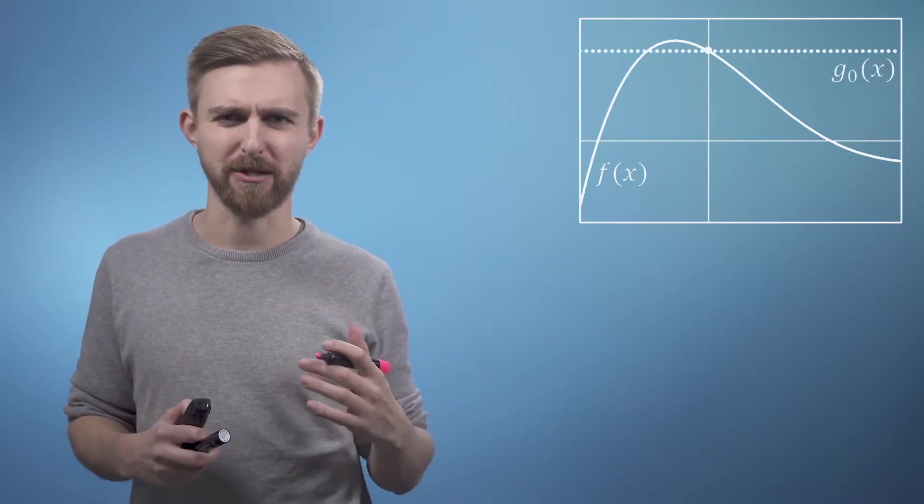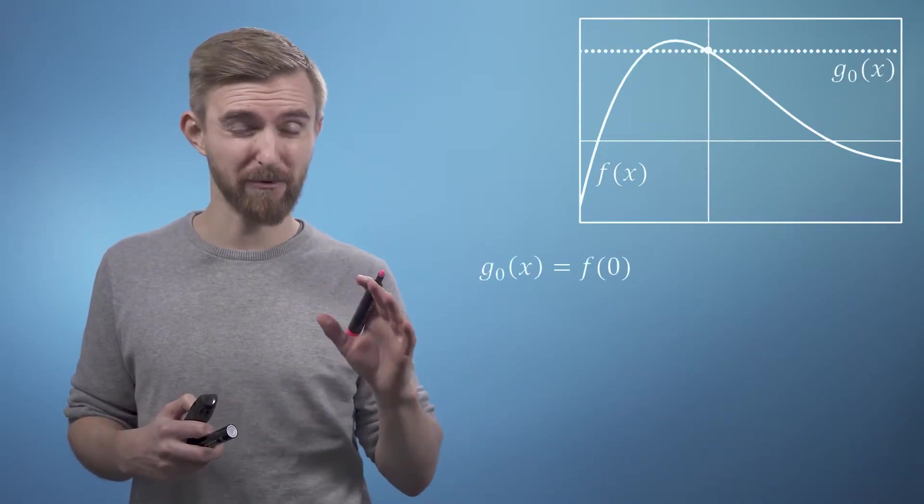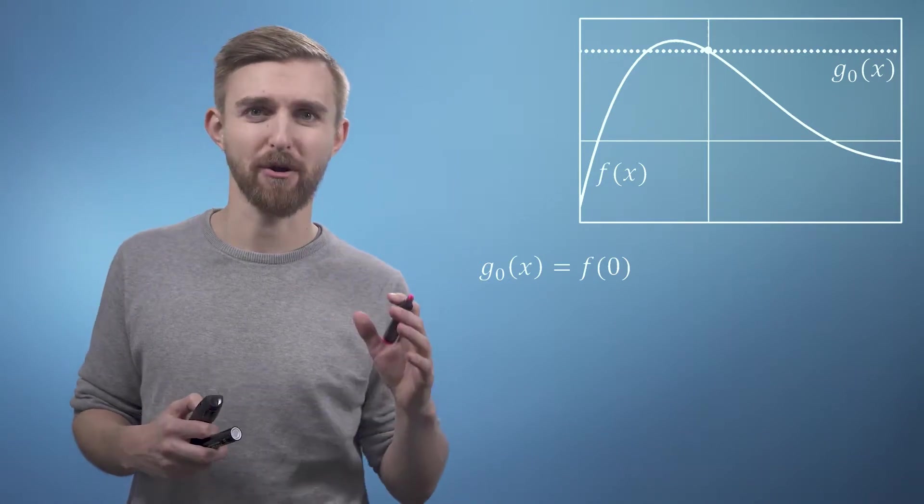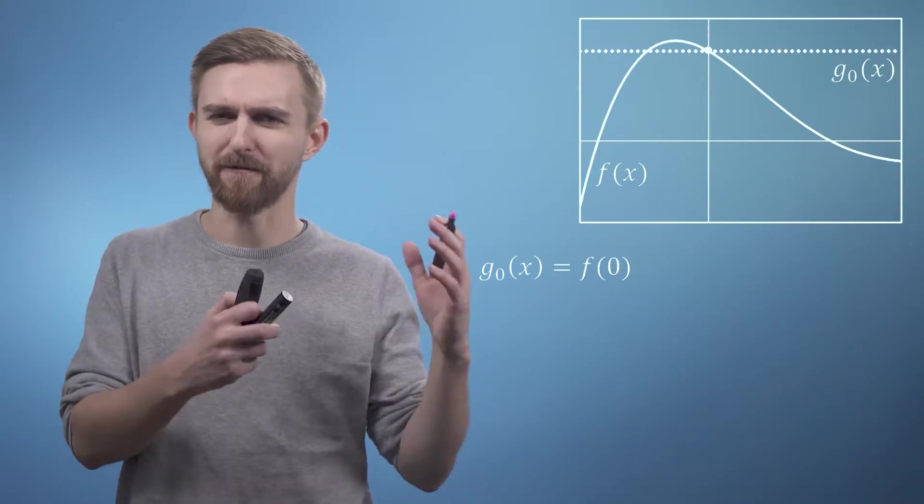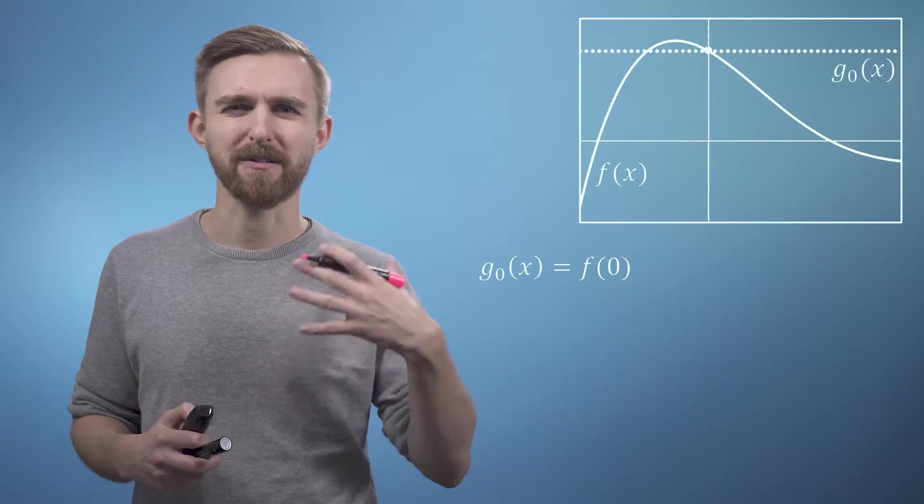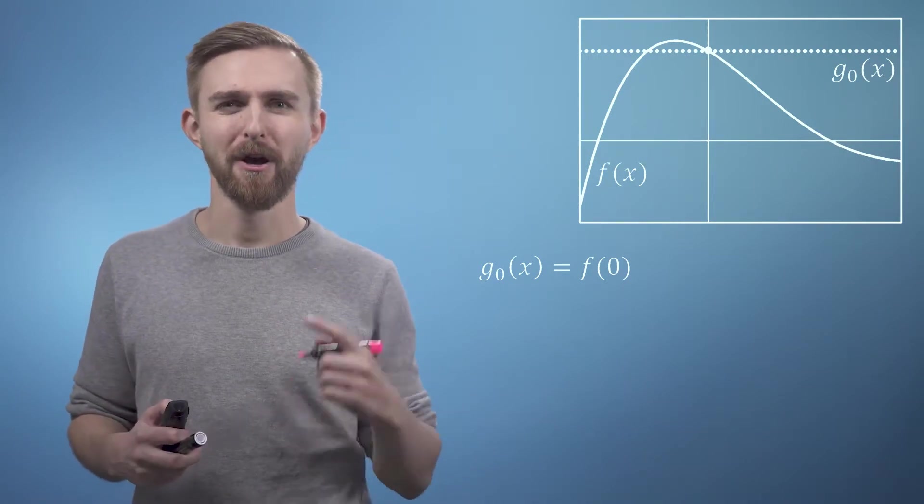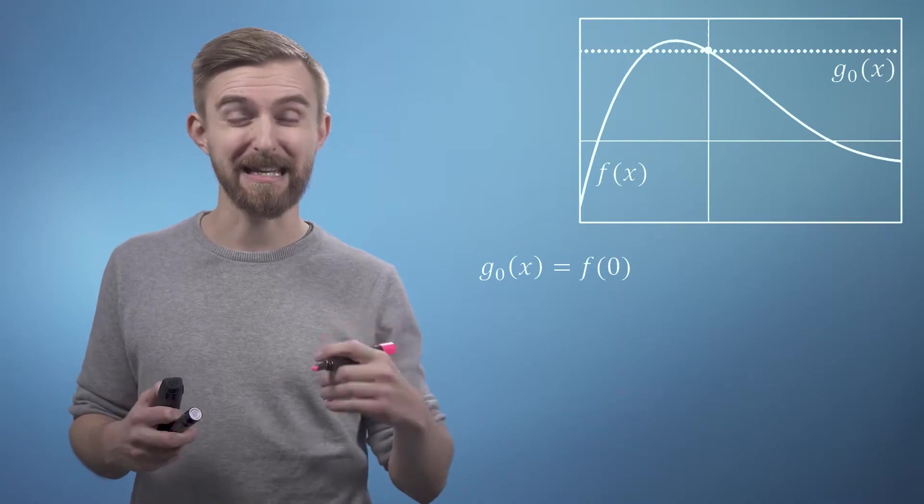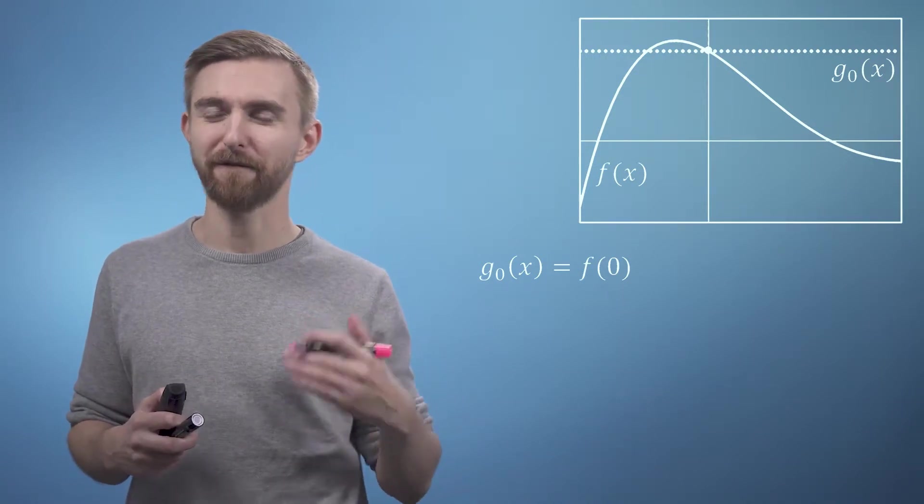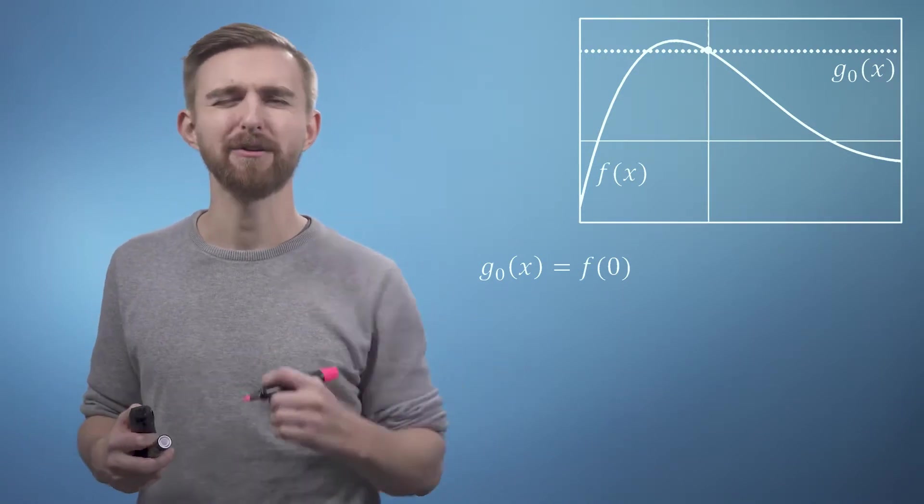So we can plot this first approximation and also write an expression for calculating g0 of x, which is just f of 0. We call this our zeroth order approximation, and clearly it's not very good. But also notice that as this line is flat, it's actually not even a function of x. We can do better.